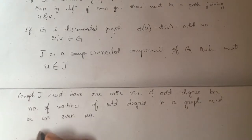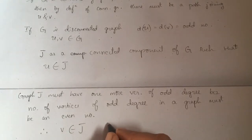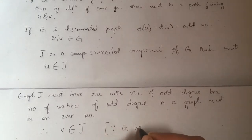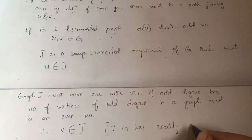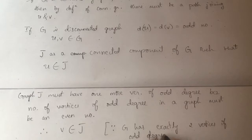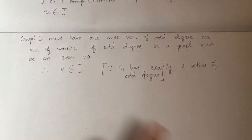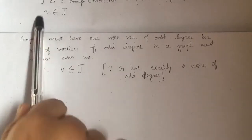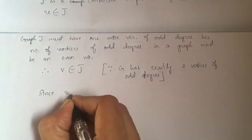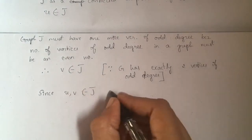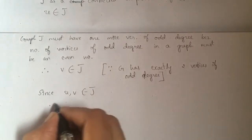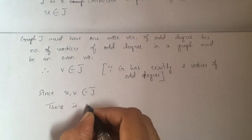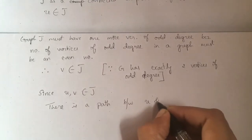So V must belong to J. What is the reason? It is already mentioned: G has exactly two vertices of odd degree. Therefore, V should belong to J. Since U and V both are in J and J is a connected component, therefore there is a path between U and V. Hence the proof.